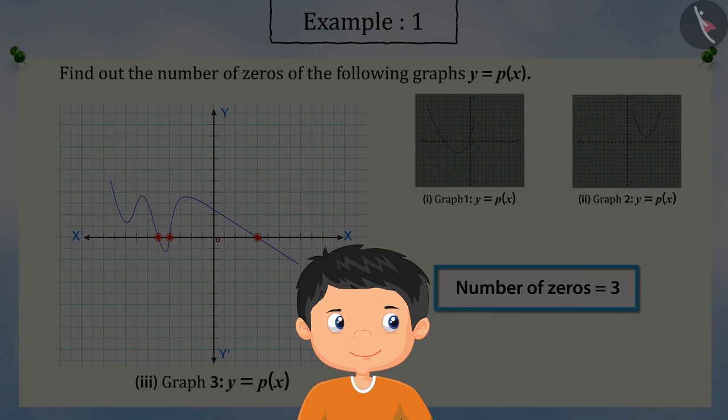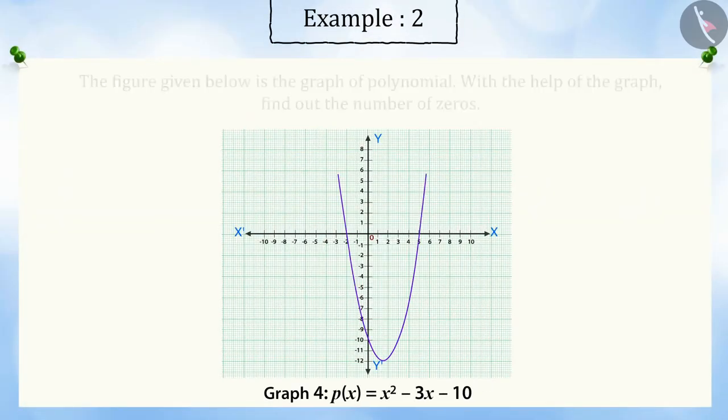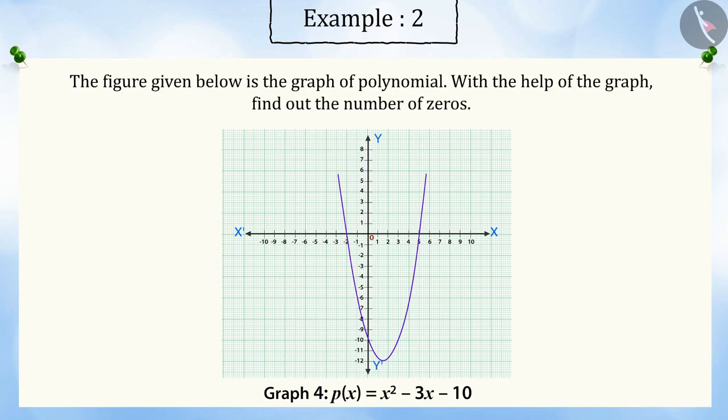Let's look at another example. The figure given below is the graph of a polynomial. With the help of the graph, find out the number of zeros.